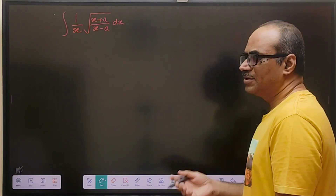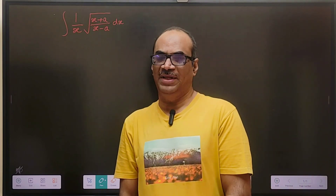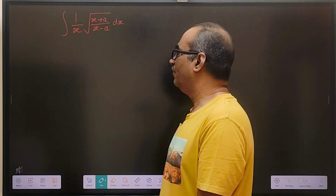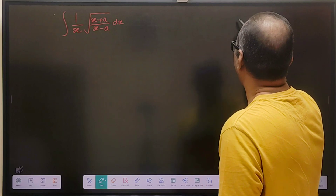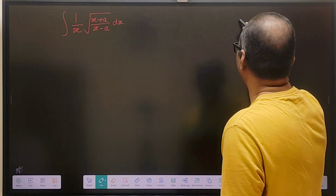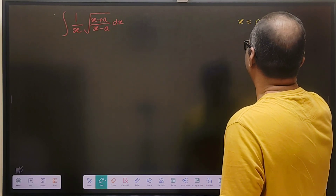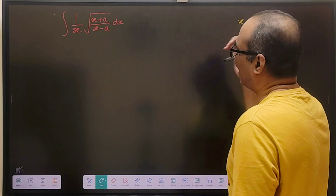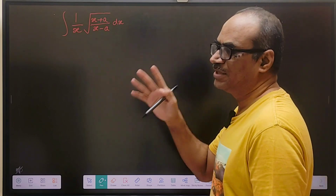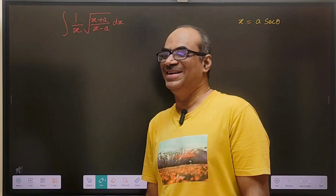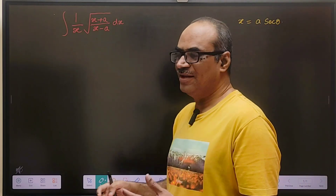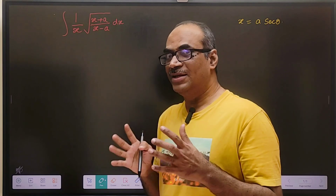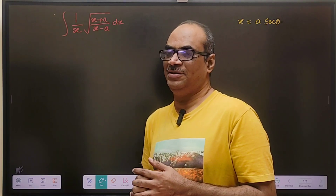We can solve this problem in more than one method. In this particular video, we will try to solve it by using a trigonometric substitution, that is x equals to a secant theta. I have a little bit of obsession towards trigonometric substitution integration — whenever I see a problem, first I look at whether I can solve it using trigonometric substitution.